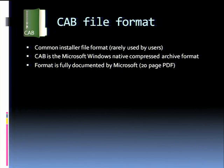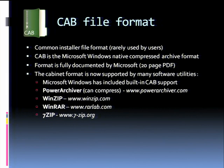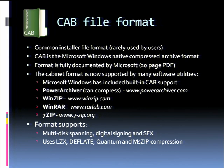The CAB file format is a very common installer format, rarely used directly by users. It was created by Microsoft and is used as an installer format for their platform. It is fully documented — a 20-page PDF that's quite detailed. It's supported by many software utilities; Microsoft Windows has included compressed folders with support for both zip and CAB files. Notably, only PowerArchiver can compress files into CAB archives, and once you create a CAB archive, you cannot add more files to it. It supports multi-disc spanning, digital signing, and SFX, and uses four compression algorithms: LZX, Deflate, Quantum, and MSZip.